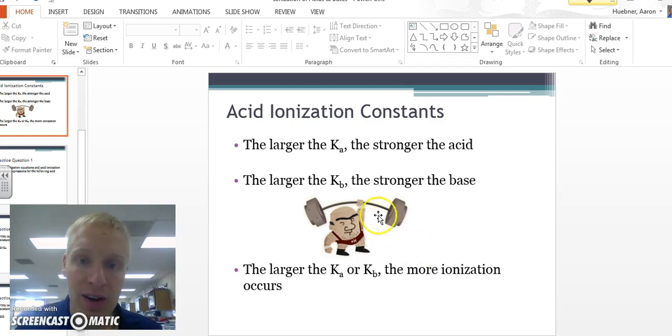The larger the Ka, the stronger the acid. The larger the Kb, the stronger the base. The larger the Ka or Kb, the more ionization occurs, therefore the stronger it is—although it's not necessarily considered a strong acid or base because it would have to ionize completely for that to occur. And that's ionization constants.